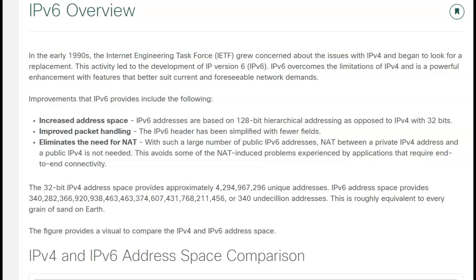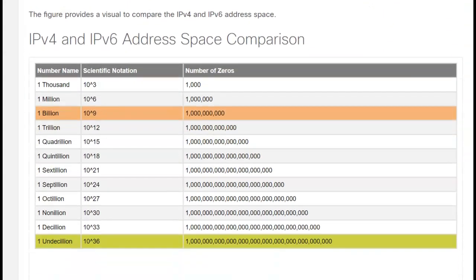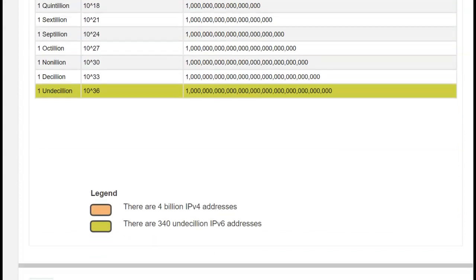So, decacillion addresses. We have an IP address for every grain of sand on the Earth. We have plenty of addresses. If you look at the basic size here, 1 billion is 10 to the 9th, and we've got 4 billion with IPv4. Well, we now have 10 to the 36, so you have a lot more addresses to come into play.